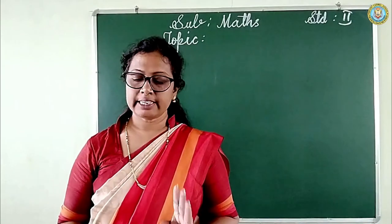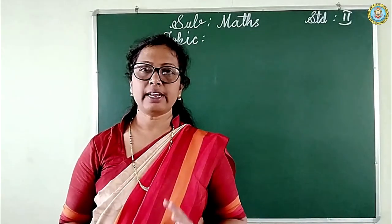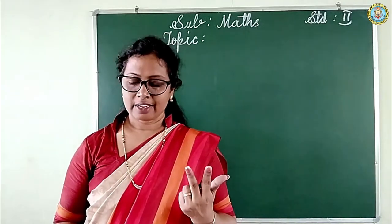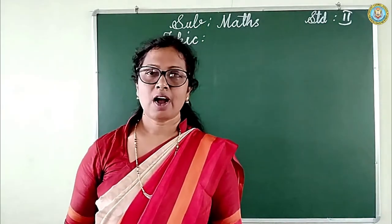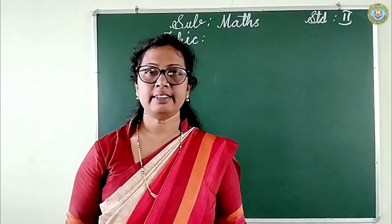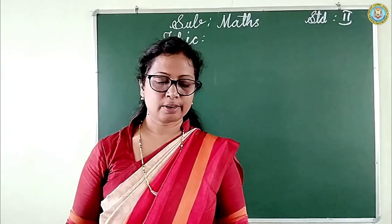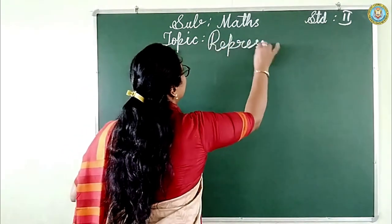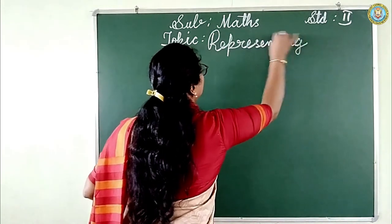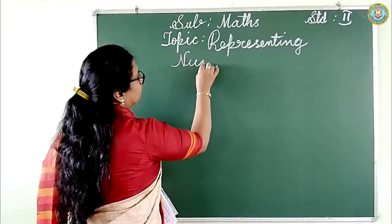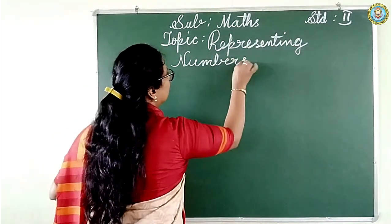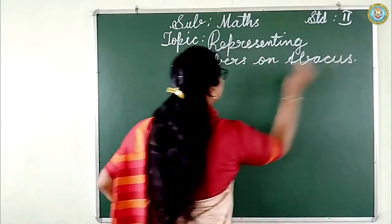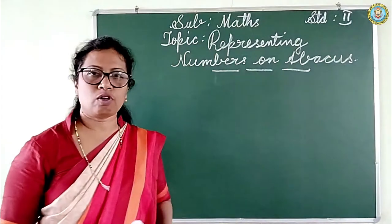If there are two spikes it has ones and tens, and three spikes adds hundreds. Today let us learn how to represent three digit numbers on abacus. The topic is: representing numbers on abacus.